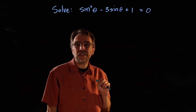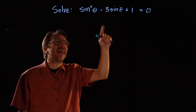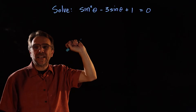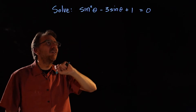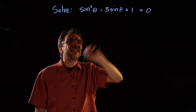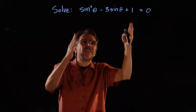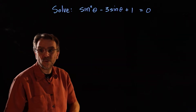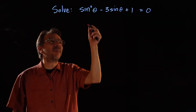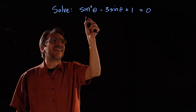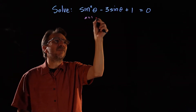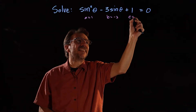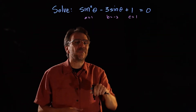Here we have another trigonometric equation. This one is quadratic. The first thing I'm going to look to see if it factors. It doesn't factor, so we're going to use the quadratic formula. Here, a is equal to 1, b is equal to negative 3, and c is equal to 1.